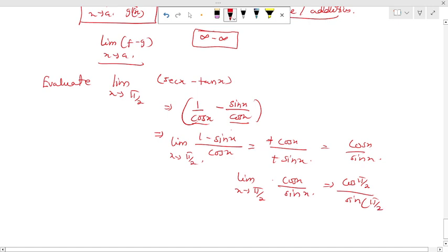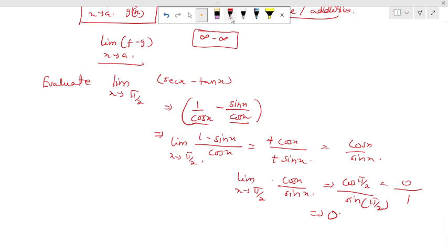Cos(90) is zero over sin(90) is one, and this obviously gives me zero. So this is how we simplify difference, which forms Rule III. Thank you, see you in the next session for Rule IV.